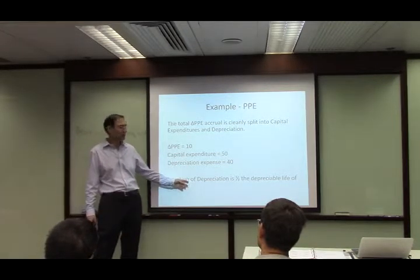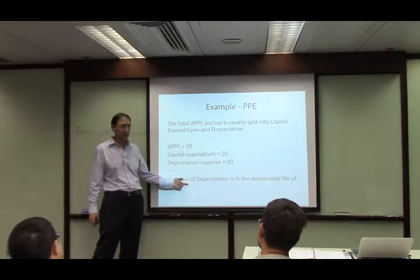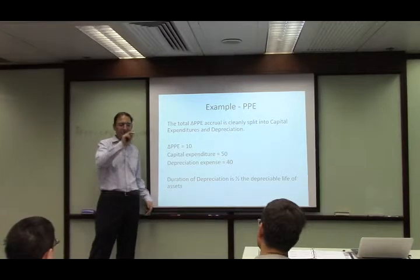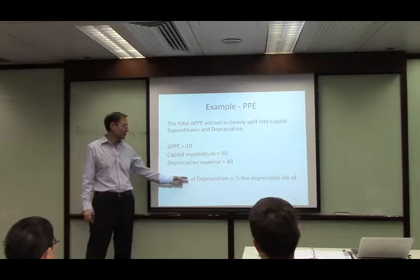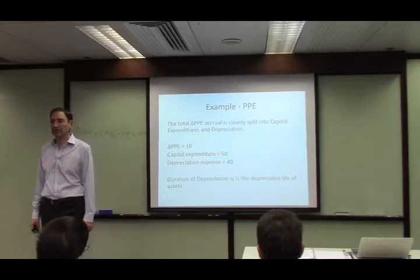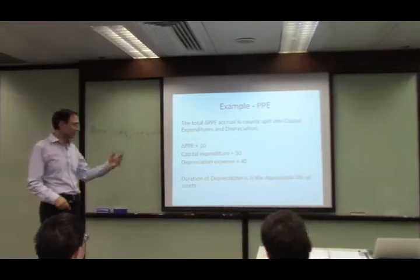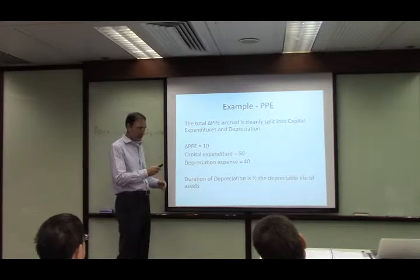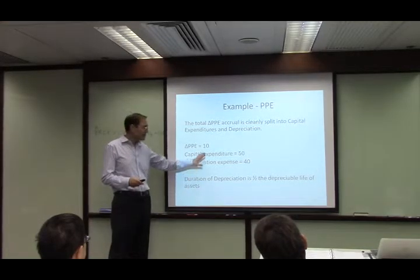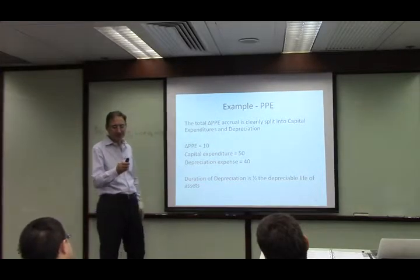What I forgot to mention is where the discretion is for depreciation expense, and how much is the duration. Because depreciation expense is not one accrual but a series of accruals, the duration is one half the depreciable life — because it's just an annuity, assuming straight line and no residual value. The basic point is: if you have the right data, it just falls off.